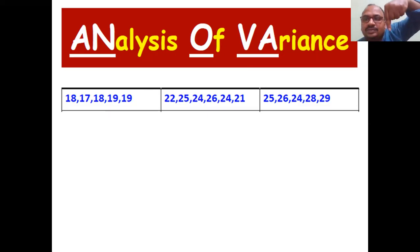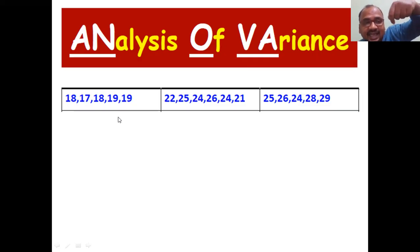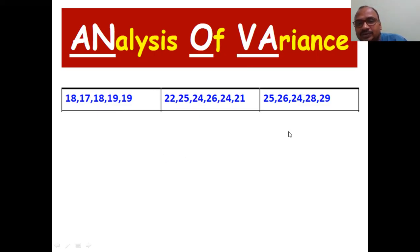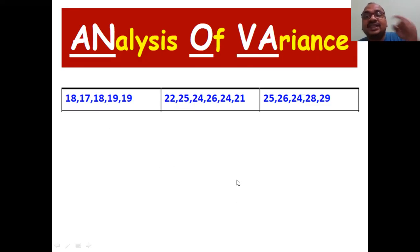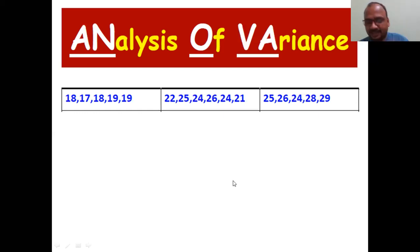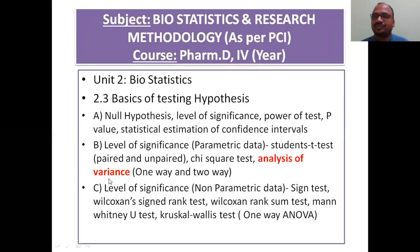Within a group, is there any variability? For example, values of 17, 18, 19, 19, 19 within one group. That variability is called within-group variance. When comparing across the three groups, that is called between-group variance. So two terms are there: within ANOVA and between ANOVA.